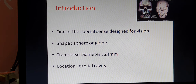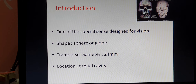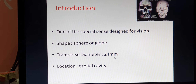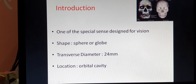The eye is one of the special sense organs designed for vision. Special sense organs means the sensations are initiated by a specific part of the body — for example, vision is only related to the eye. The shape of the eyeball is a sphere or globe, and its transverse diameter is about 24 millimeters. This transverse diameter is very important in diagnosing optical errors. The eyeball is located in the orbital cavity.